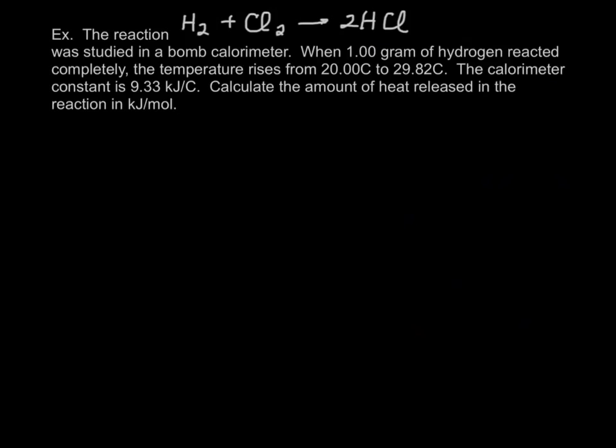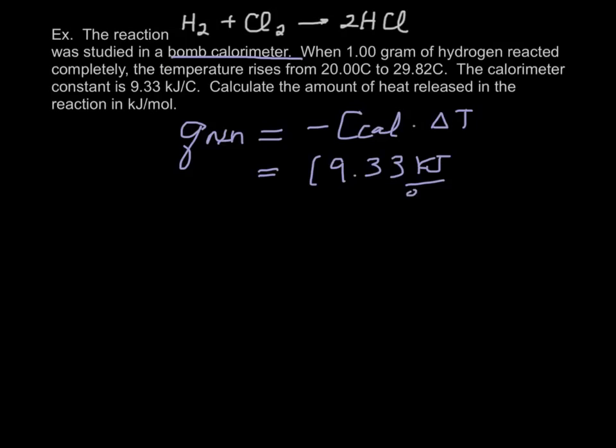So, let's look at one where there's an actual reaction taking place. The reaction H2 plus Cl2 gives you 2 HCl. And let's go ahead and study it in a bomb calorimeter. Q of reaction is going to equal to minus the calorimeter constant times the delta T. And it says the calorimeter constant is 9.33 kilojoules per degree Celsius. And the change in temperature looks like it's 29.82 minus 20. So, I'm going to go with 9.82.